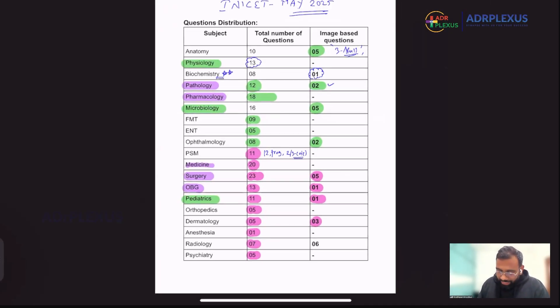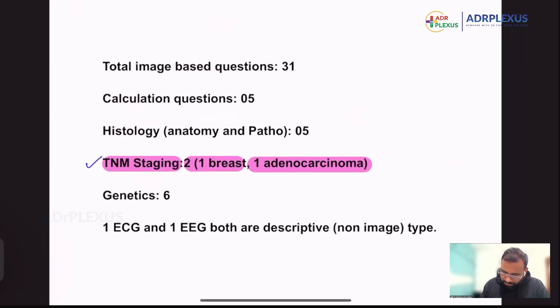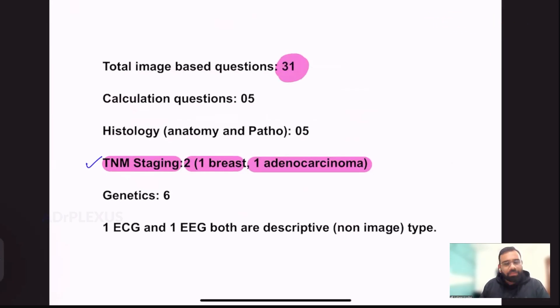So this is what our analysis of INICT, May 2025. So based on the subject and their approximate number of questions, I can't say it is exact number of questions, because many questions they overlap with one another. So like, approximately, these are the number of questions which we got. And so out of 200, totally, we got like around 31 image-based questions. It's like almost around 15% of the questions out of 200. It's like around 15% of the questions are image-based questions.